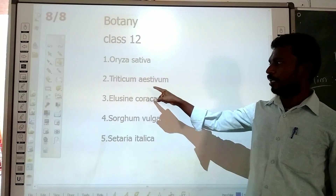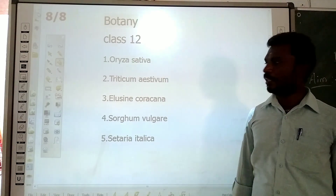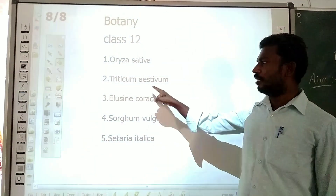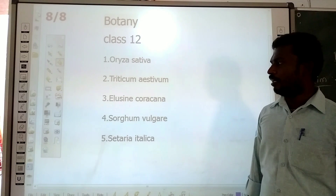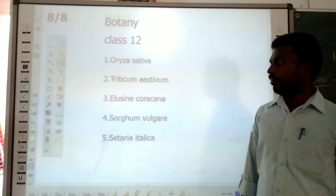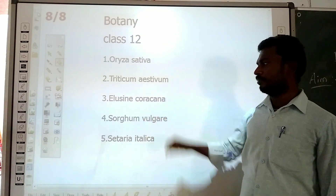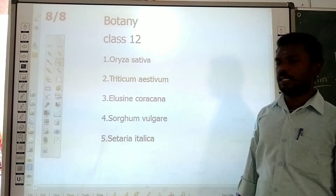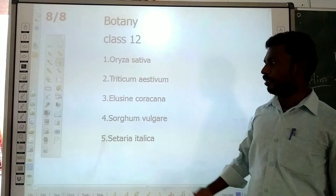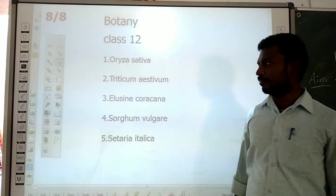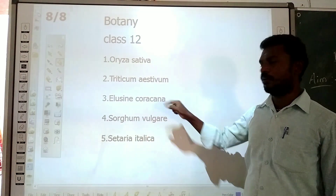What is the binomial name of wheat? It is Triticum aestivum. What is the binomial name of the Indian millet? It is Sorghum — that is the Indian millet.